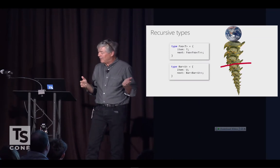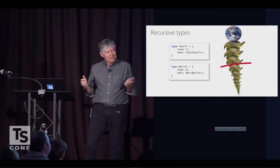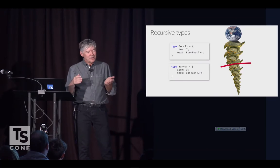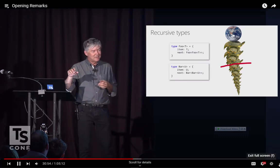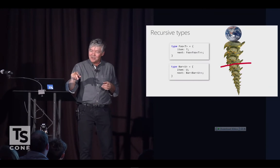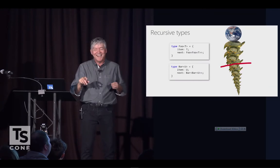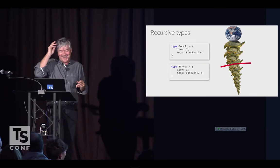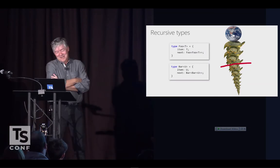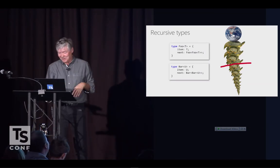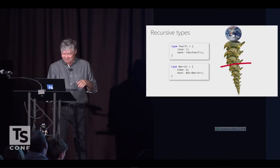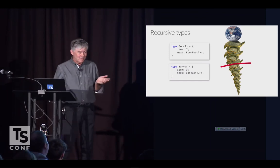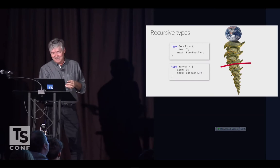We actually got a bug report just in the last couple of months: someone had a JSON document ten levels deep and noticed that at the seventh level, making a certain mistake wasn't caught. Well, that's the turtle cutoff. We may have to increase that limit, but it's tricky. These are some of the crazy problems where we actually spend our time.